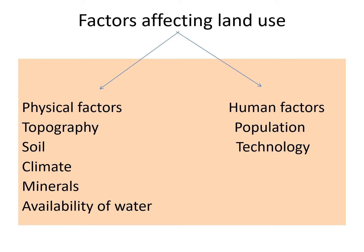The factors which affect land use pattern of an area can be categorized as physical factors and human factors. Physical factors comprise topography, soil, climate, minerals and availability of water. On the other hand, human factors include population and technology.